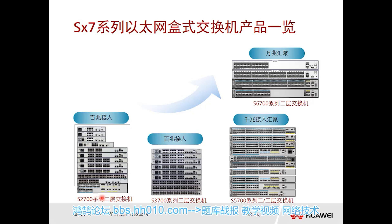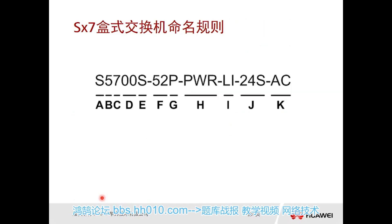The S-3700, S-5700, and S-6700 are all Layer 3 switches. The difference between a Layer 3 switch and a Layer 2 switch is that a Layer 3 switch supports dynamic routing protocols. It is important to pay attention to the S-3700: it has three or four versions, and the Li version of the S-3700 is a Layer 2 switch. The rest are all Layer 3 switches. This is a small but important difference.